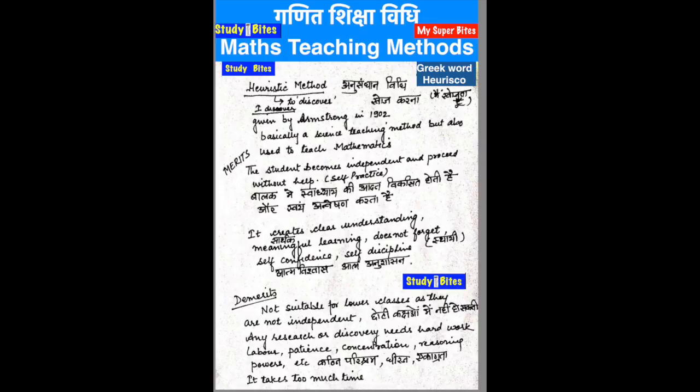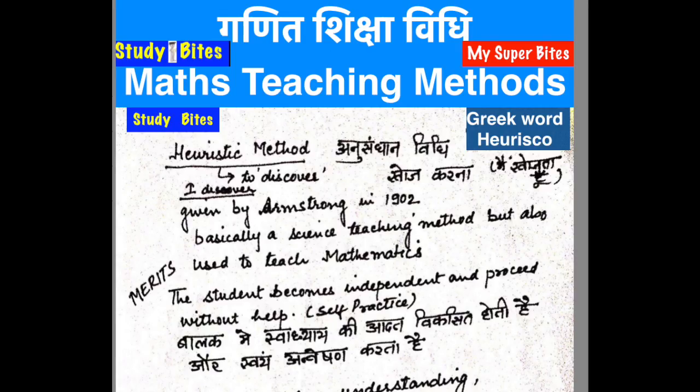Today we are going to do the Heuristic Method, i.e. Anusandhan Vidhi. 'Heuristic' is a Greek word, and it means 'I discover' — that means I will find out, I will discover.